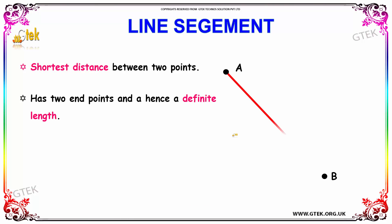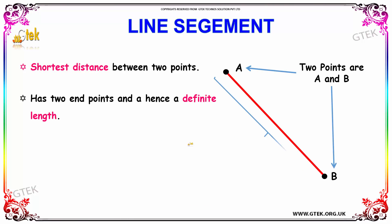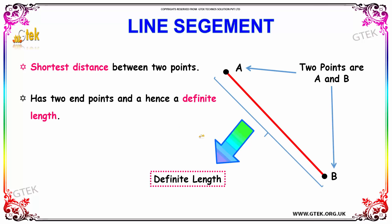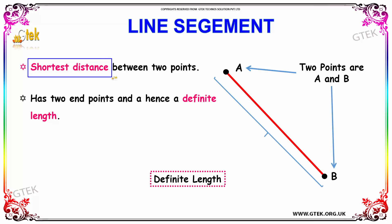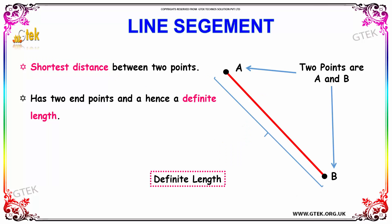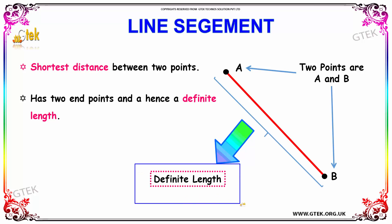Next, we have the line segment. A line segment is nothing but the shortest distance between two points. It has two end points and hence it has a definite length. The two points are A and B.